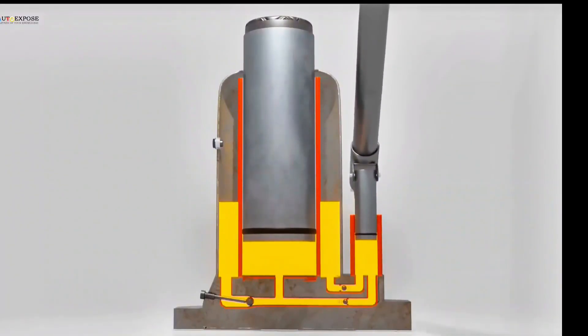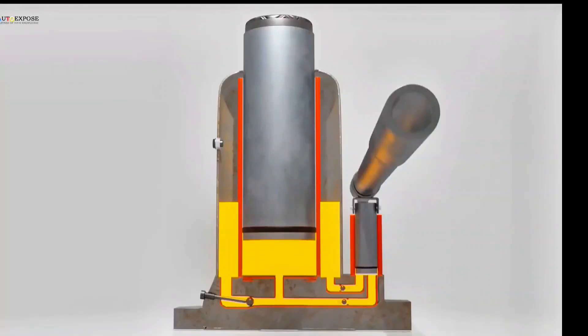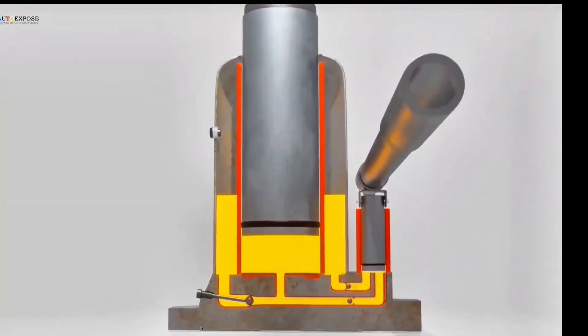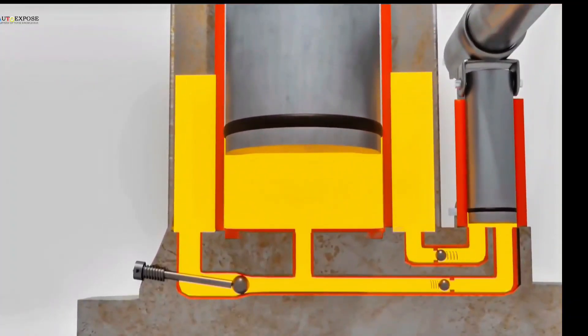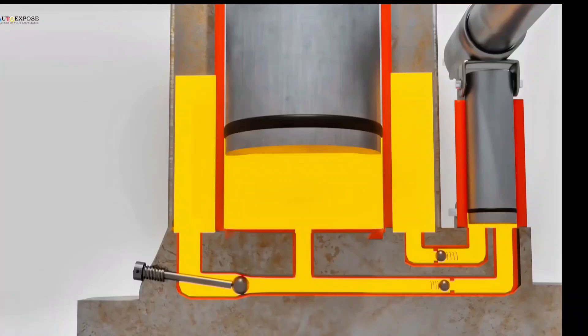Now, how do we return the output piston to its lower position? It turns out, there's an additional channel called the bypass channel. This channel directly connects the output cylinder to the reservoir. The bypass channel is equipped with a release valve and a release bolt.